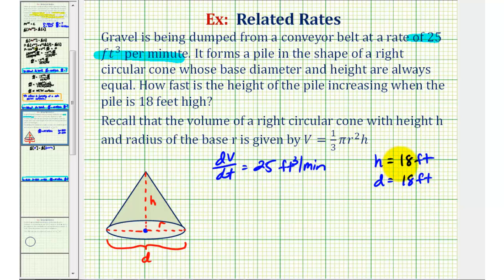But since this problem involves the volume of a right circular cone, notice how the formula for the volume only includes r, not d, where the radius would be half the length of the diameter. So if d is equal to 18 feet, we also know r is equal to 9 feet.